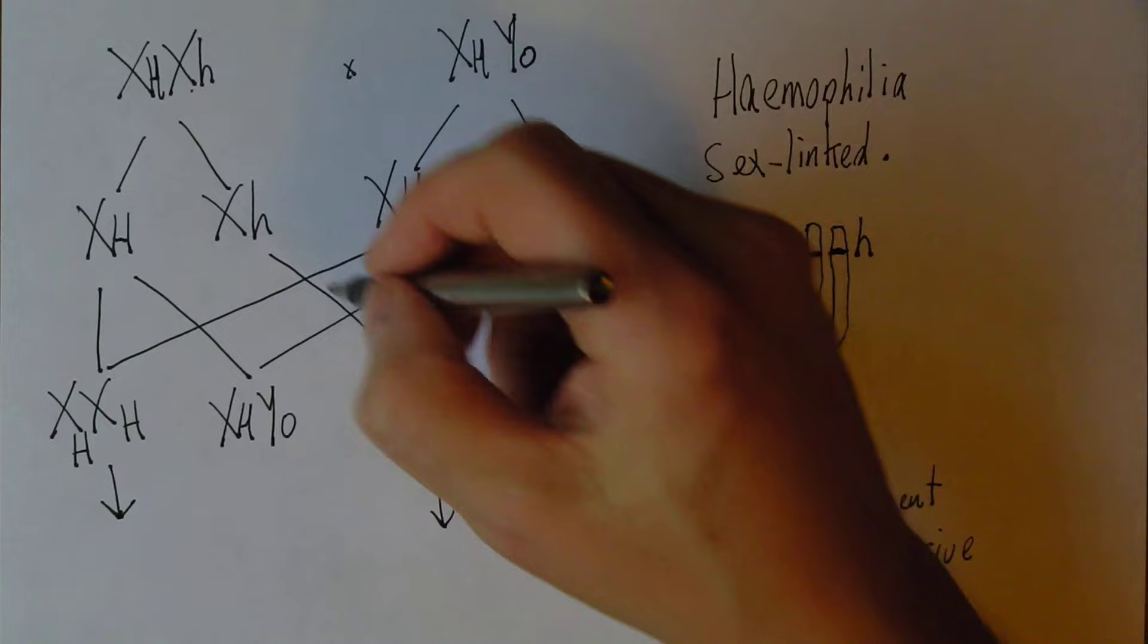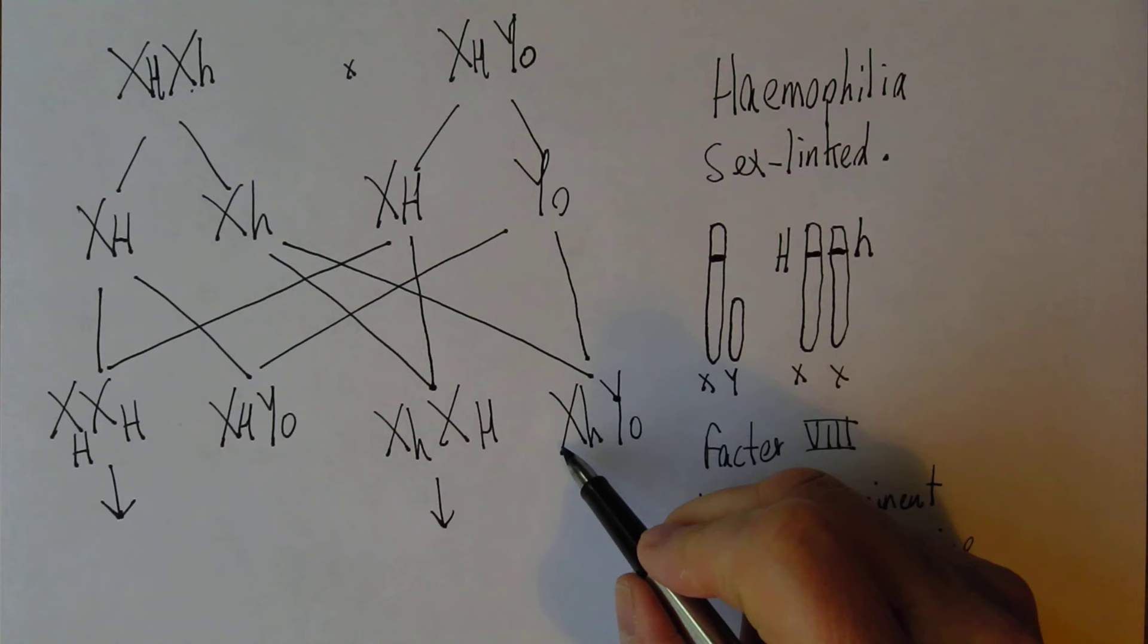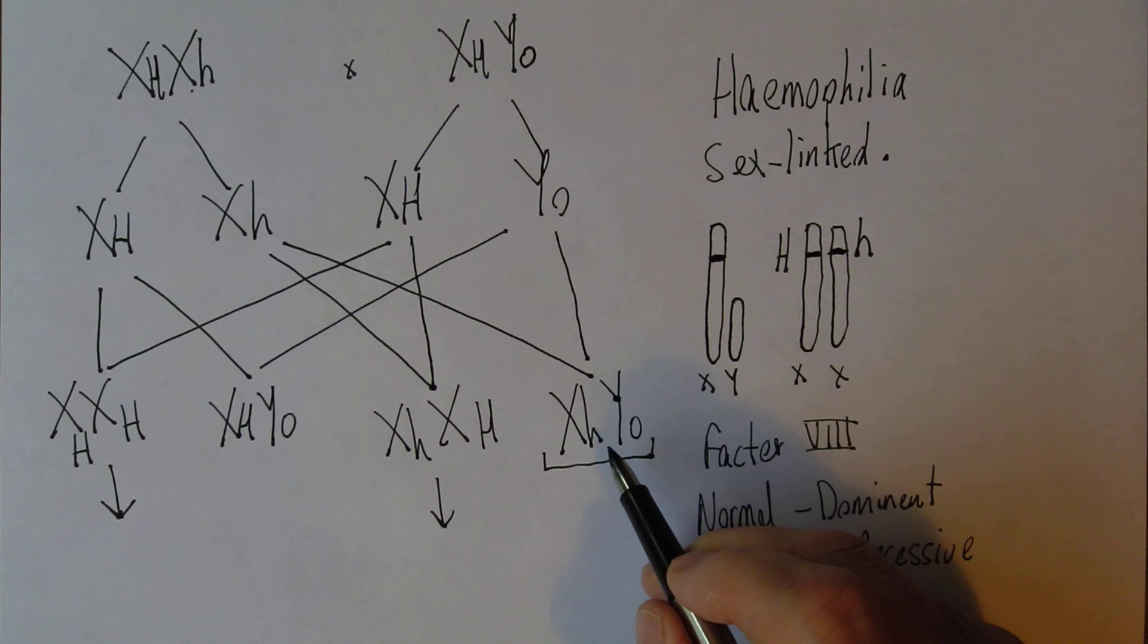But the fourth possibility is that we could have an X from there and a Y from there. So here we have an X small h, Y zero. And unfortunately, this boy does not have a copy of the normal dominant gene; therefore he cannot produce Factor VIII, therefore he will suffer from haemophilia.